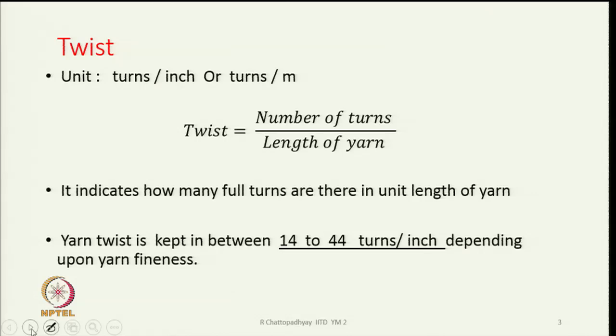What is the unit of twist — how do we measure and quantify twist? The unit is turns per inch or turns per metre. Twist is the number of turns in a given length of yarn divided by that length. If we count the full turns in a given length and divide by that length, the ratio gives us twist. It indicates how many full turns are there in a unit length of yarn.